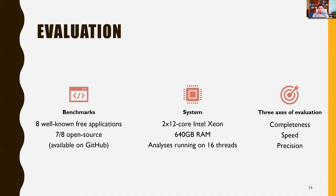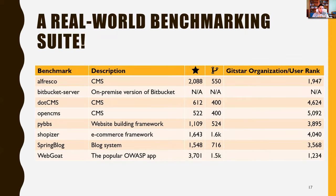Our evaluation consists of three axes: completeness, speed, and precision. We evaluated Jaki on a set of real-world, realistic, very large, and widely-used applications. These applications have thousands of stars on GitHub, hundreds of forks, and our benchmarking suite contains content management systems, e-commerce frameworks, and website-building frameworks. We think it's an excellent suite for evaluating future work.